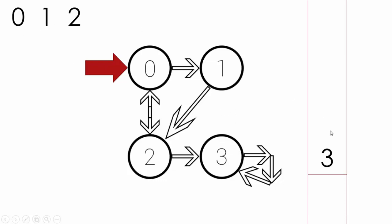Whenever you dequeue something, you print it. So I dequeued 0, then 1, then 2, printing them. Then I have 3 in the queue — 3 has a self-loop. I dequeue 3 and try to self-loop back to 3, but 3 is already visited. Whenever we print something, we know it is visited. So 3 is already visited and we don't go again. This is how you avoid infinite self-loops — by using a visited array. The visited array checks whether a node is visited, and if it is, we do not put it back into the queue.